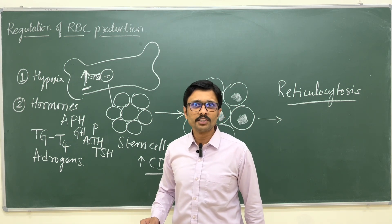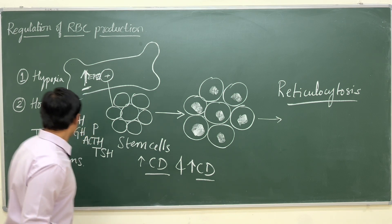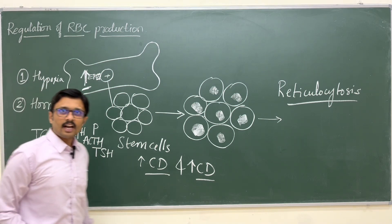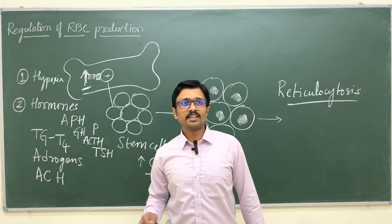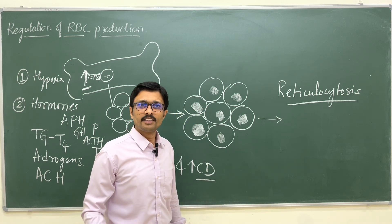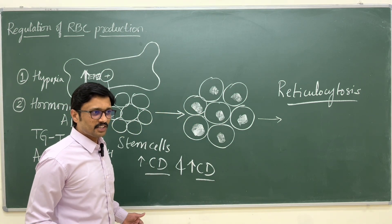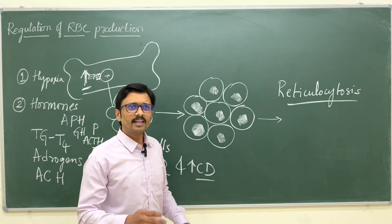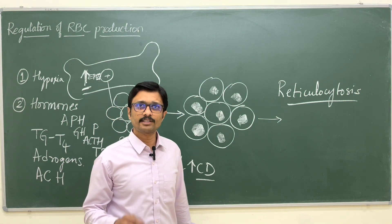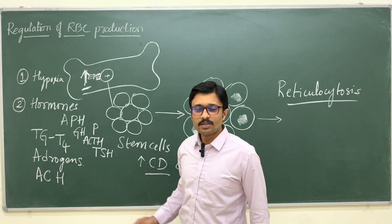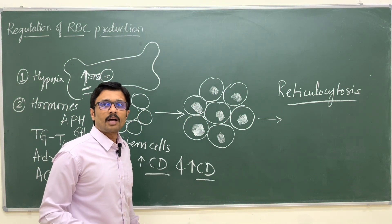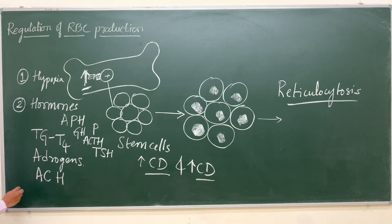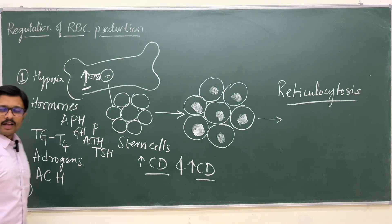Adrenocortical hormones — mainly glucocorticoids from the adrenal gland — increase RBC production by stimulating the kidneys to produce more erythropoietin. In cases of increased glucocorticoids such as Cushing syndrome, there can be a mild increase in RBC count. So adrenocortical hormones and glucocorticoids also increase RBC production by increasing erythropoietin secretion.